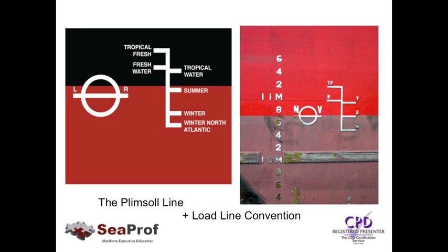If you look at the left-hand side of the diagram, you'll see a circle with a line through it and the initials L on the left and R on the right — this means Lloyd's Register. This circle and line is the Plimsoll line. Following it through to the right-hand side of the diagram, it coordinates with a mark labeled Summer — the maximum depth to which a vessel can load during the summer season. The Plimsoll line is named after Samuel Plimsoll, a 19th century British politician who forced through legislation to ensure a mark was placed on the side of vessels to indicate the maximum draft to which they could be loaded.